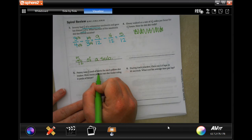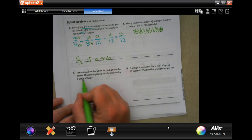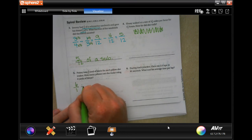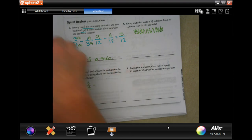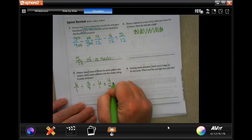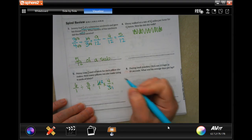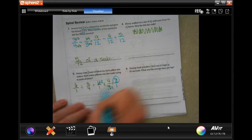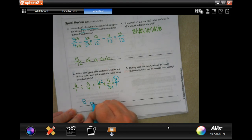Penny uses 3 quarters of a yard of fabric for each pillow she makes. How many pillows can she make using 6 yards of fabric? Now we do have 6 divided by 3 quarters. So we're going to have, we're going to keep, change, and flip. So now 3 goes into 3 once, 3 goes into 6 twice. 2 times 4, 8 over 1. So she can make 8 pillows.